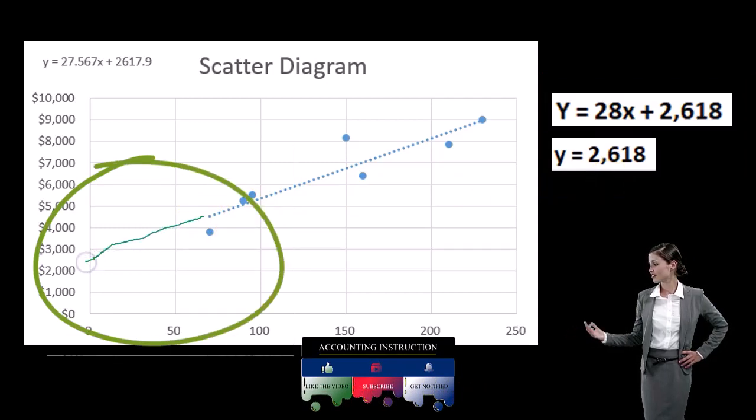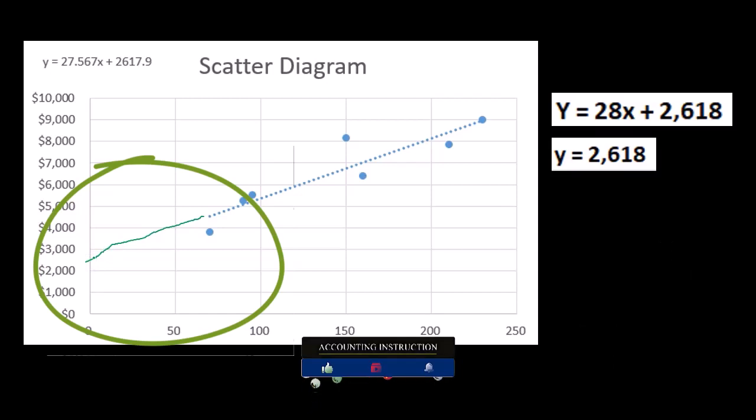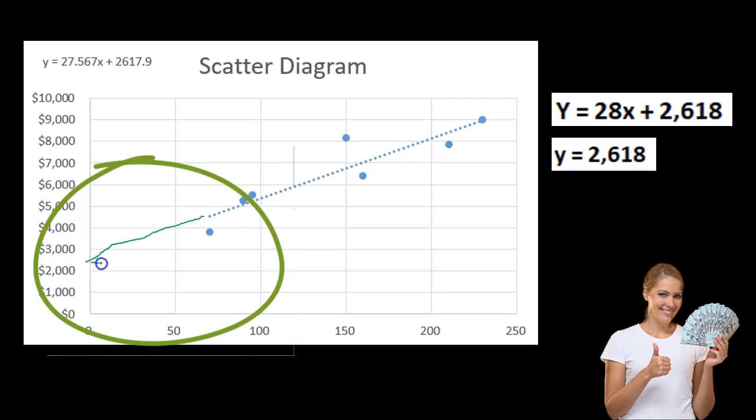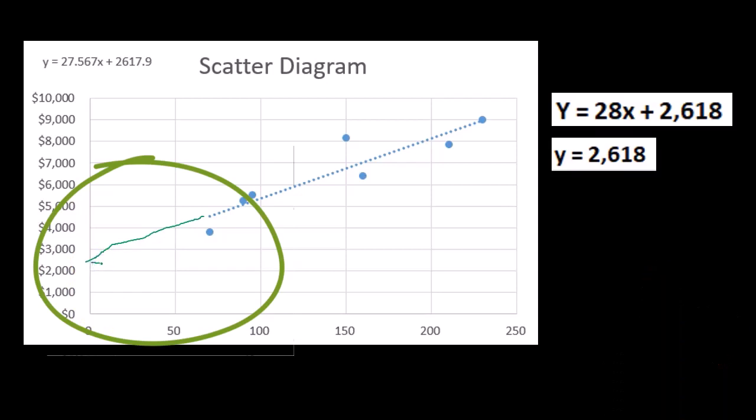So if we extend this out then, we're going to say this is going to be somewhere about 2618, where it hits the vertical axis. And that, again, is what we would assume would be the fixed portion. Because if it's at zero and we still have 2618, that must be our fixed cost. Well, that's going to be the fixed portion. And then we can try to estimate or approximate what the slope of the line is with our line, which is going to be our trend line in our scatter diagram.